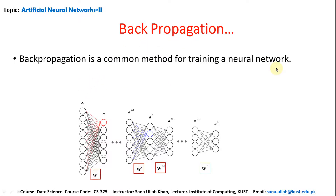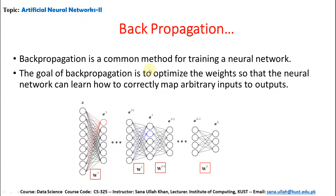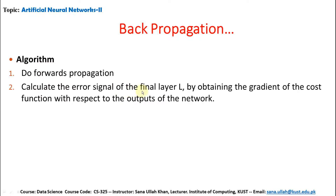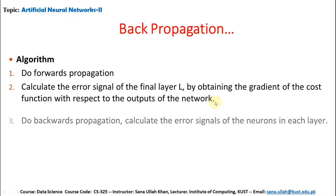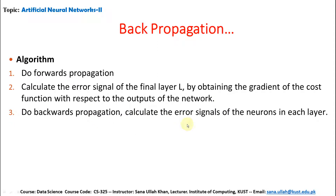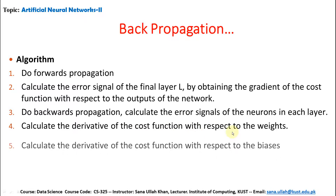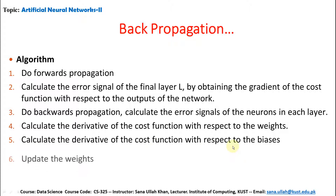Back propagation is the common method for training a neural network. The goal is to optimize the weights so that the neural network can learn how to correctly map arbitrary inputs to outputs. The algorithm: start from an initial point, do forward propagation from previous layer to next layer, calculate the error signal of the final layer L by obtaining the gradient of the cost function with respect to the output of the network. Then do backwards: if the error is too large, calculate the error signal of the neuron in each layer, calculate the derivative of the cost function with respect to the weights, and with respect to the biases. Update the weights.